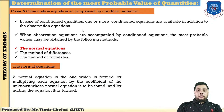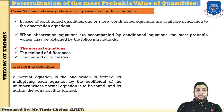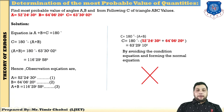When both condition and observation equations are combined, we find the most probable value by three methods: the normal equation, the method of differences, and the method of Fourier. In this particular session, only the normal equation method is explained, as exam questions are generally based on the normal equation.